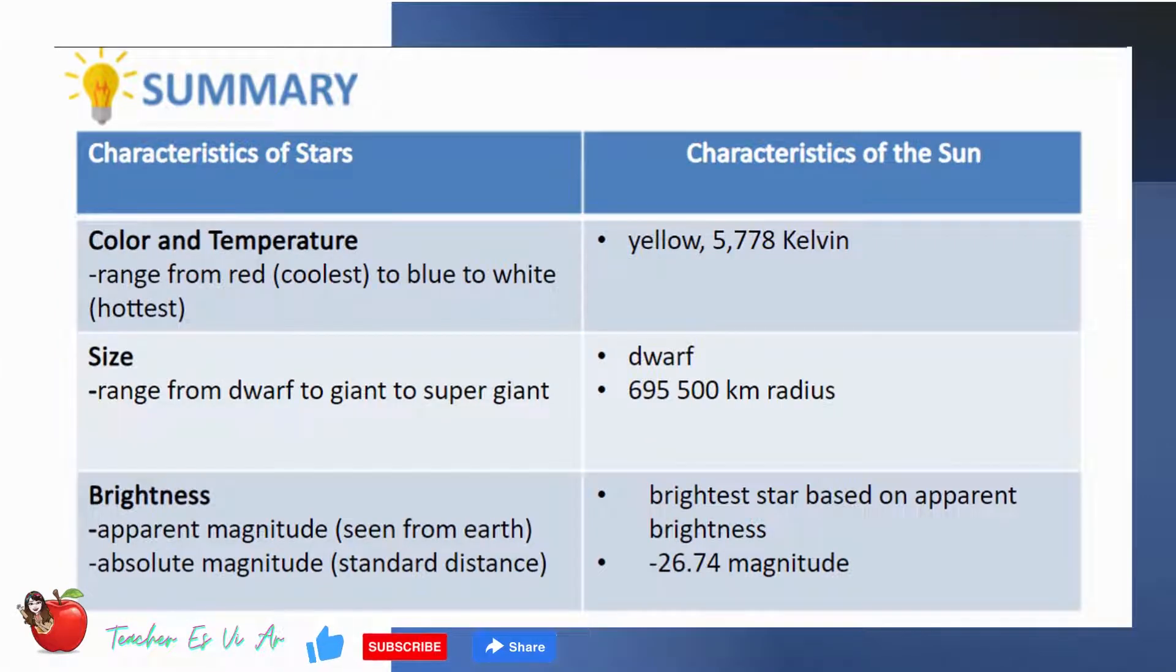Here's the summary of the lesson about inferring the characteristics of stars based on the characteristics of the sun. Color and temperature range from red, coolest, to blue to white, hottest. Sun is yellow and it is 5,778 Kelvin. Size range from dwarf to giant to supergiant. Sun is dwarf in 695,500 kilometers radius and brightness. Apparent magnitude, seen from Earth, sun the brightest star based on apparent brightness. Absolute magnitude, standard distance, sun is 26.74 magnitude.